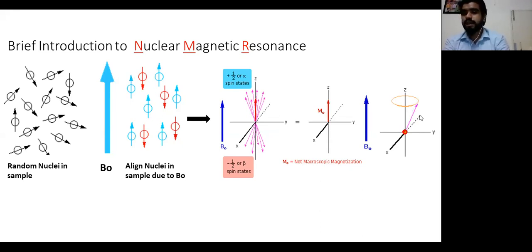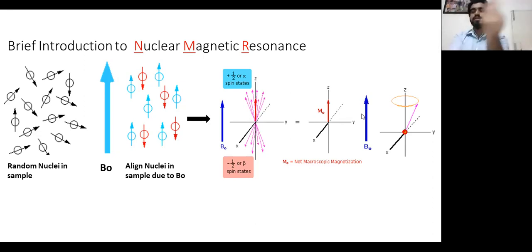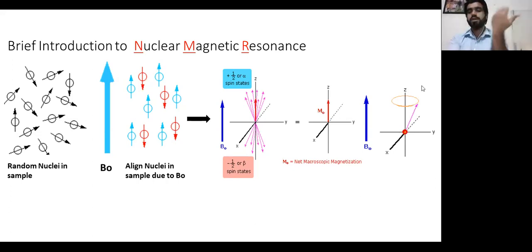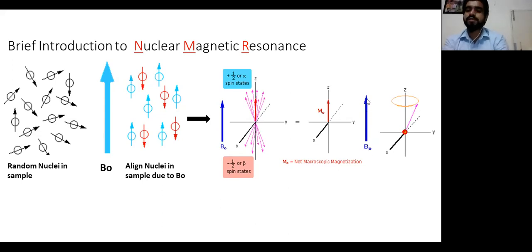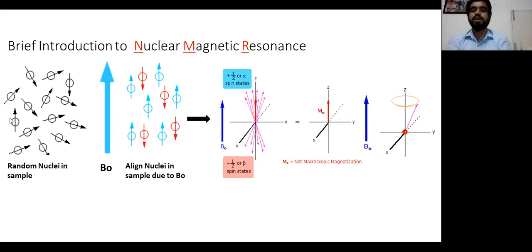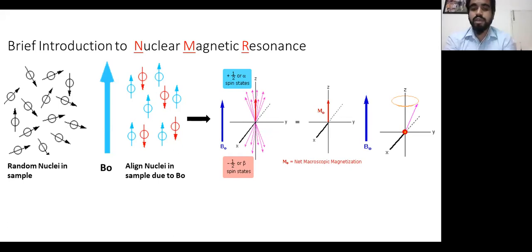A single spin precesses around the Z-axis — it revolves just like a spinning top, which processes around a particular axis. These spins are precessing around the perpendicular Z-axis, and this phenomenon is known as resonance. The spins are resonating along the Z-axis, which is perpendicular to the external magnetic field. So from this we understand what NMR is: nuclear, magnetic, and resonance — nuclear magnetic resonance.